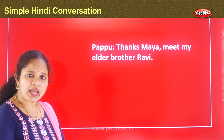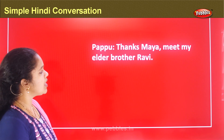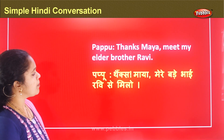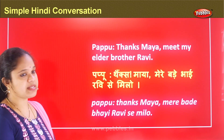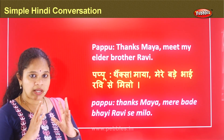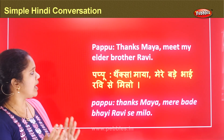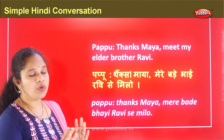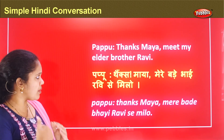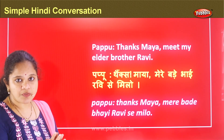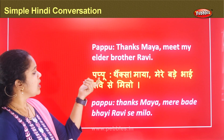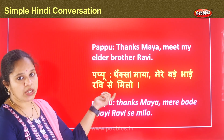Papu says: Thanks Maya, meet my elder brother Ravi. How do we say this in Hindi? 'Mere bade bhai Ravi se milo.' Here Papu introduces both people to each other — Maya and Ravi. Ravi is the brother of Papu, so Papu is introducing Ravi to Maya. Thanks Maya. Meet my elder brother Ravi. 'Mere bade bhai Ravi se milo.'